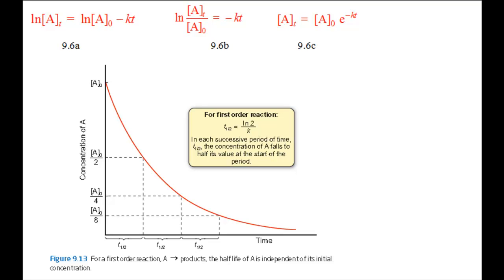The integrated rate equation for a first-order reaction, equation 9.6, is written in three alternative ways in box 9.1. These equations, 9.6a, b and c, tell you three important characteristics of first-order reactions.